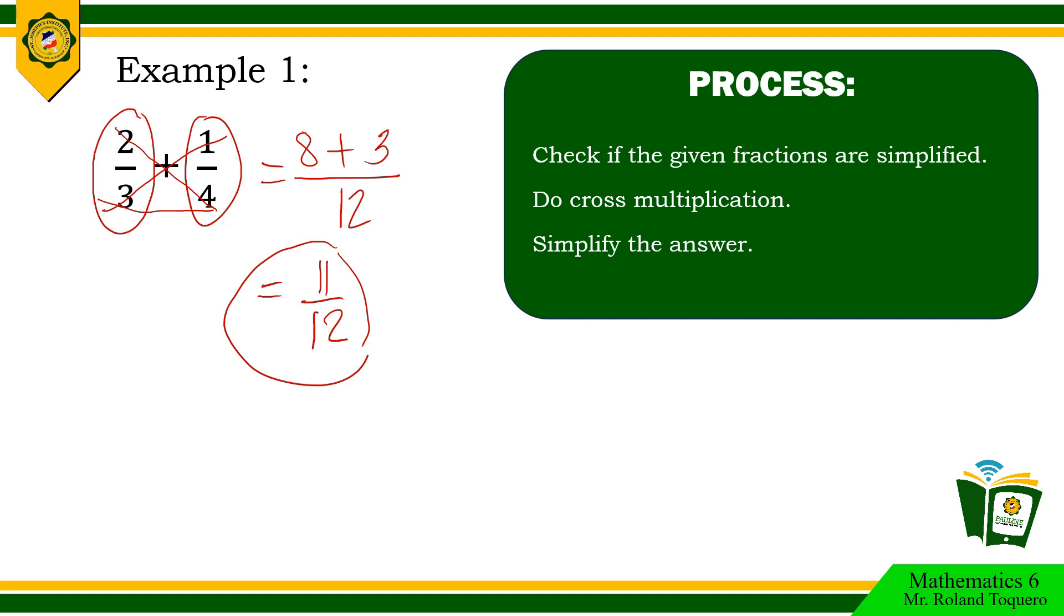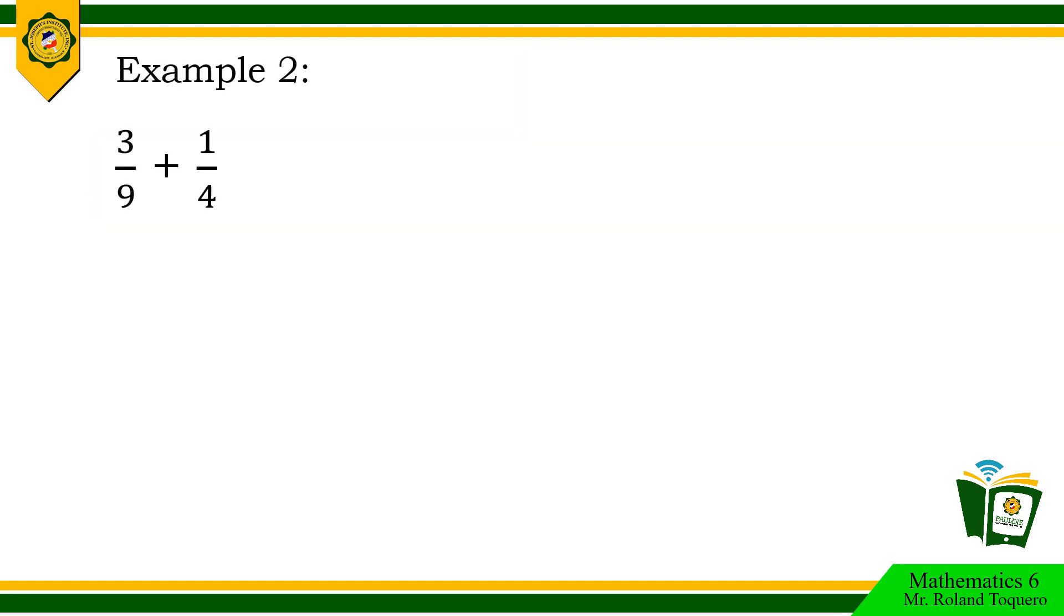Let us take a look at the next example. 3 ninths plus 1 fourth. 3 ninths can still be simplified. The numerator and the denominator is divisible by 3. Divide 3 by 3. Divide 9 by 3. Therefore, the lowest term of 3 ninths is 1 third. 1 fourth is now simplified.